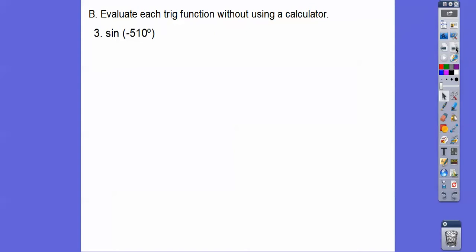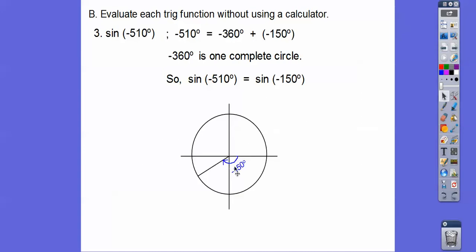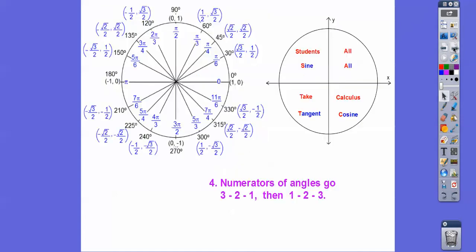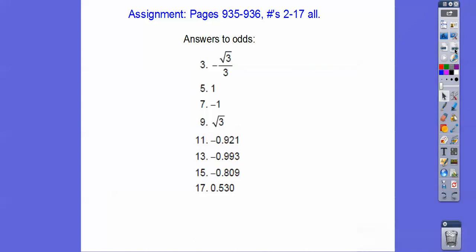How about the sine of negative 510 degrees? Negative 510 equals negative 360 plus negative 150 — that's one full clockwise circle plus negative 150. So the sine of negative 510 is the same as the sine of negative 150. Going 150 degrees clockwise from zero puts us at a 30-degree reference angle in quadrant 3, where sine is negative. So the sine of negative 510 is negative one-half. If you're in my class, that's your assignment — take care.